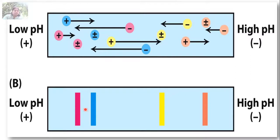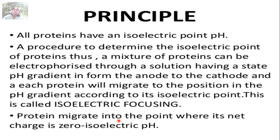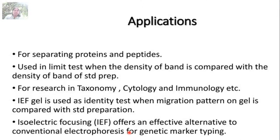The isoelectric point varies for each protein molecule depending upon their charges. All proteins have an isoelectric point. A mixture of proteins can be electrophoresed through a solution having a pH gradient from anode to cathode, and each protein will migrate to a position according to its isoelectric point. The protein migrates to the point where its net charge is zero — that pH is called the isoelectric point, and this technique is called isoelectric focusing.